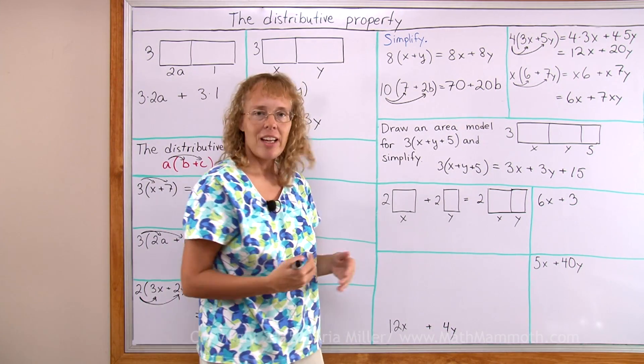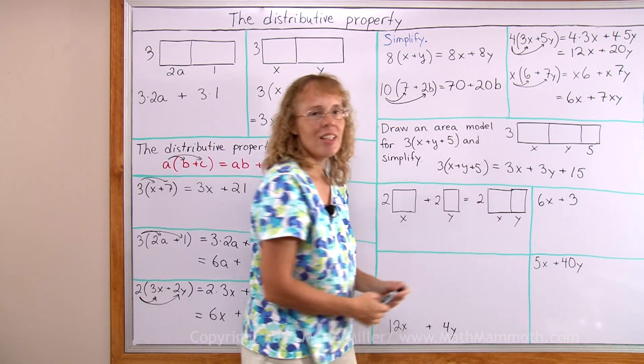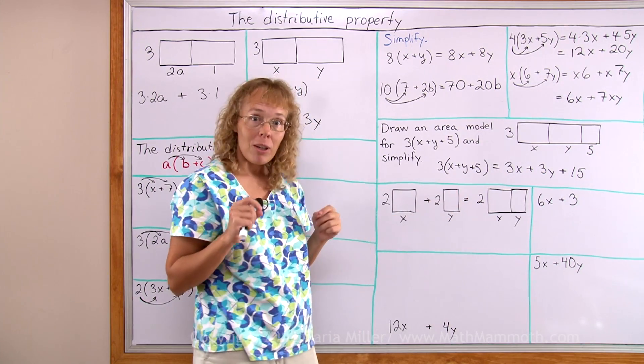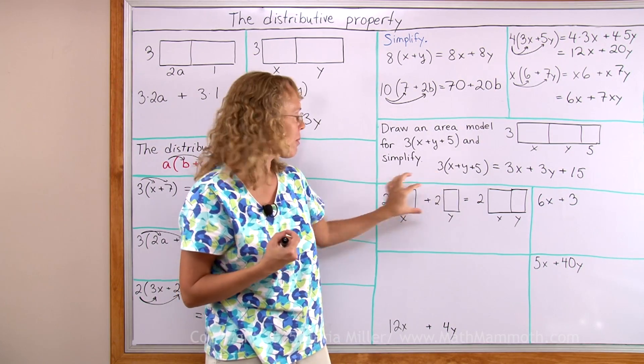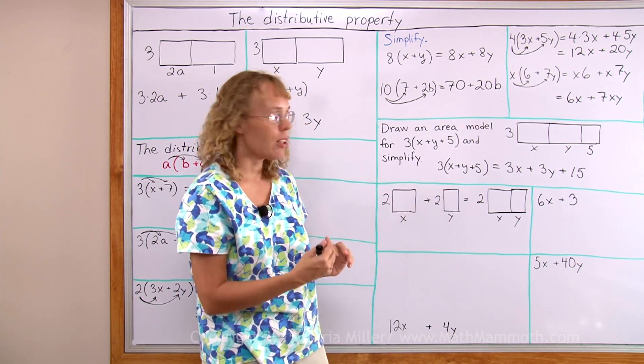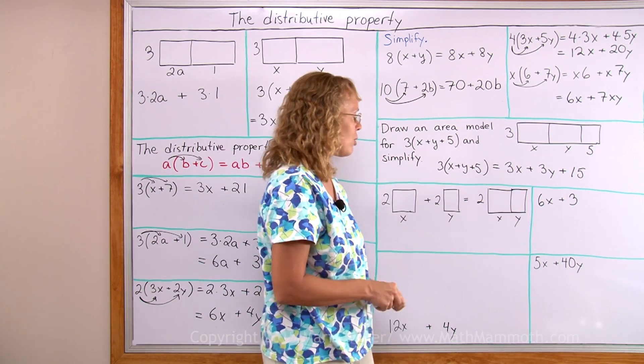If I think of the area model, it means that I have first two separate rectangles and I join them together to this one longer rectangle, and that only works if one of the side lengths is the same. Like here, if this side is two and this side is two, then I can join them together to a longer rectangle and put two here, as you can see in the picture.